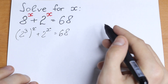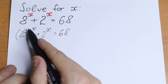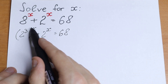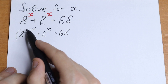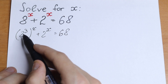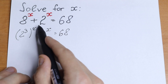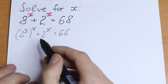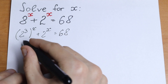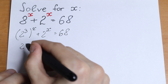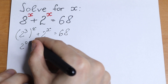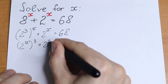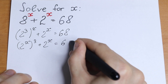So what are we going to do next? Take a look. We have 2 cubed raised to the power x. We all know the rule that we can swap this exponent — this is the rule of interchange. As a result we can write this as 2 to the power 3x, and then plus 2 to the power x, equal to 68.